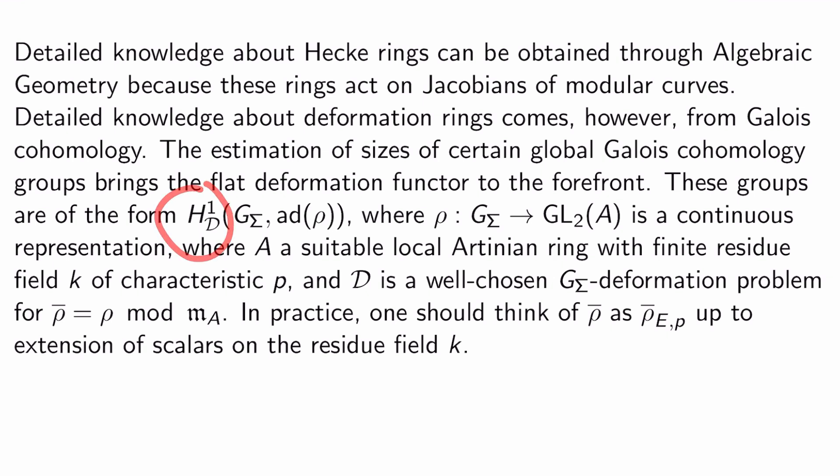You know, we called them H^1_D, G_sigma, ad(rho), where sigma was some set of primes, and D was some deformation type associated to that set of primes, where rho from G_sigma to GL_2 of A is a continuous representation, where A is a suitable local Artinian ring with finite residue field K of characteristic some prime P. And this kind of curly D here, the script D here is like well-chosen G_sigma deformation problem for rho bar, which is rho mod M_A, where M_A is the maximal ideal of A. In practice, when I bring up things in this level of generality here, really what you should be thinking about is rho bar is just like rho bar E,p up to extension of scalars on the residue field K, if you want like a specific concrete example to latch onto.